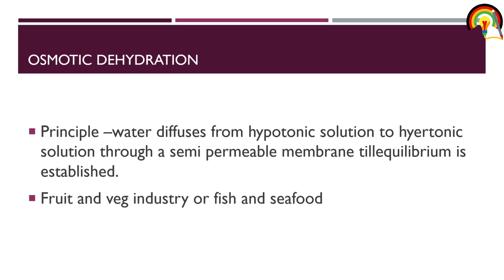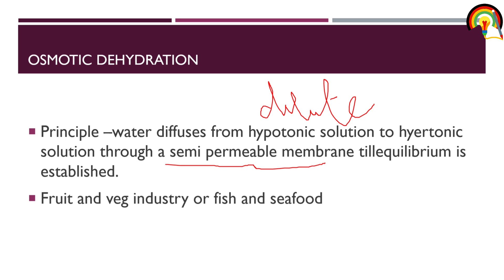The last type is osmotic dehydration. The principle is that water diffuses from a hypotonic solution (dilute solution) to a hypertonic solution (concentrated solution) across a semi-permeable membrane until equilibrium is established. Osmotic dehydration is more suitable for the fruit and vegetable industry, and also the fish and seafood industry.